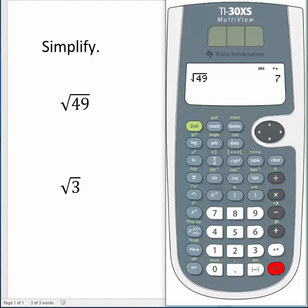The Enter key is located at the bottom right of the calculator, and the answer to our problem appears in the window to the right of the problem. So, the square root of 49 is 7.